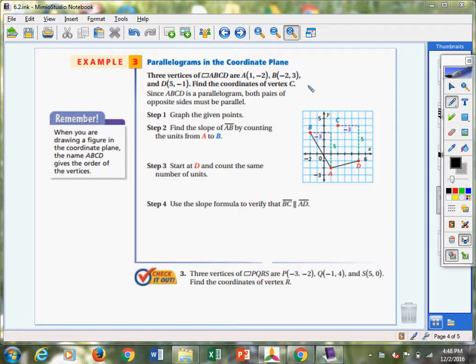You see A is at 1, negative 2, B is at negative 2, 3, and D is at 5, negative 1. We have to find the coordinates of vertex C.